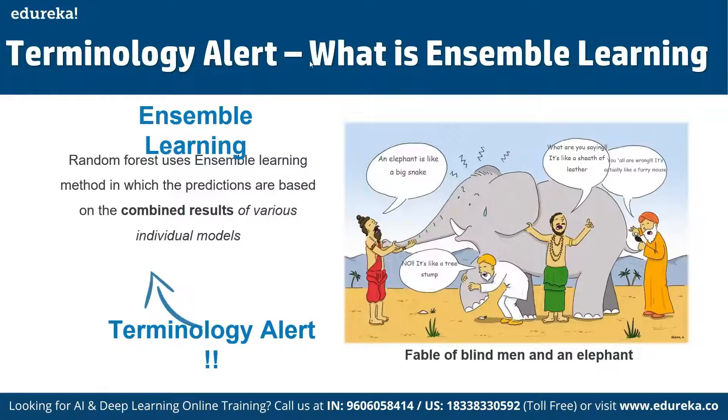That's why Random Forest comes in — it is based on the idea of bagging, which reduces variation in predictions by combining the results of multiple datasets. This is what ensemble learning is: predictions are based on the combined results of multiple individual models.